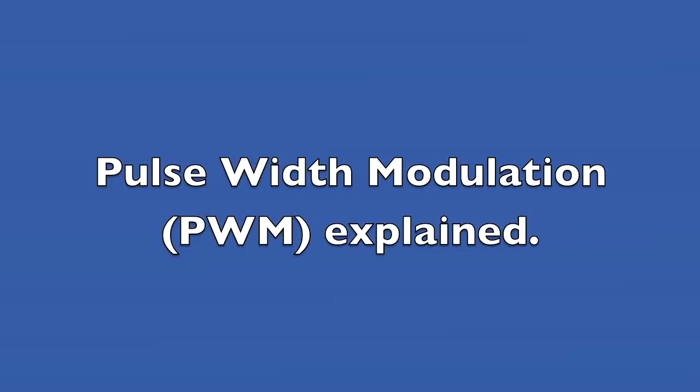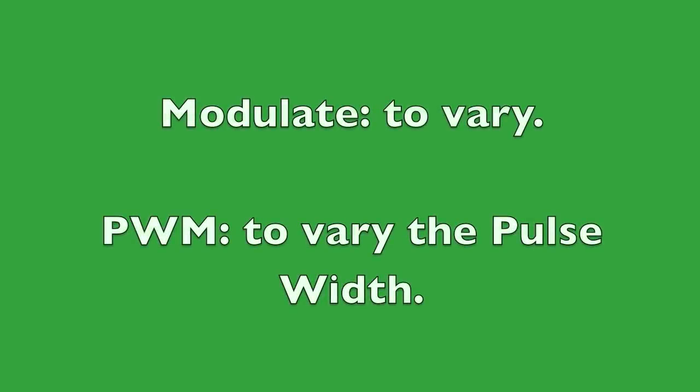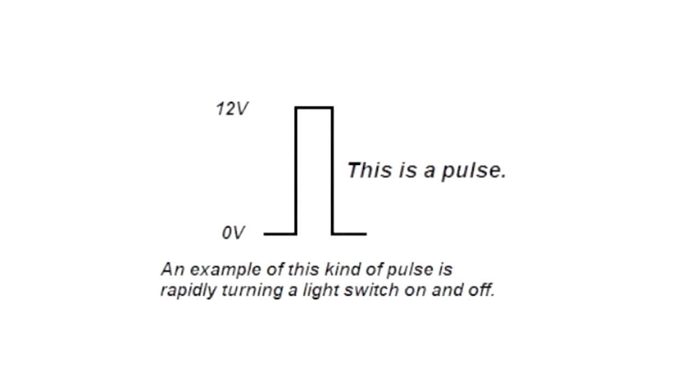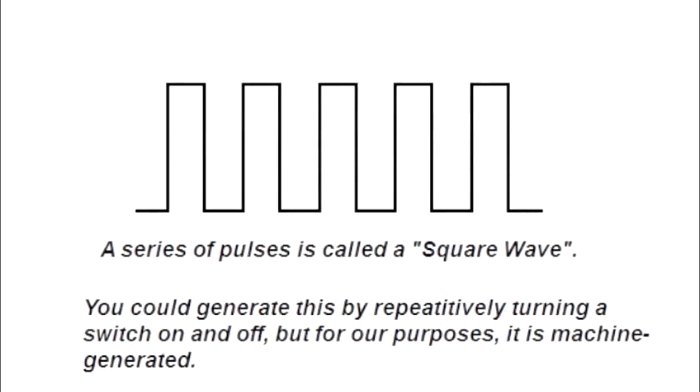In every case, the way these dimmers will dim the LED is by a technique called Pulse Width Modulation, or PWM. A pulse is simply a transition from 0 volts to 12 volts and back. The simplest example would be turning the switch on and off. It would generate a single pulse as shown here. And if we turn that switch on and off repetitively, we'll have a series of pulses which is called a square wave.